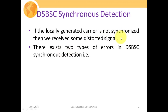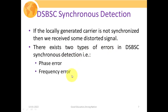If the locally generated carrier is not synchronized, we receive a distorted signal. There exist two types of error in DSBSC synchronous detection: phase error and frequency error. If the locally generated carrier frequency has differences with the actual carrier wave, we encounter these errors. We will discuss both of them one by one.